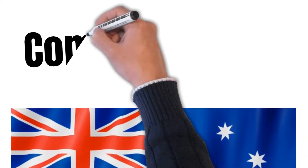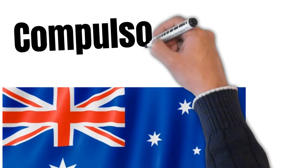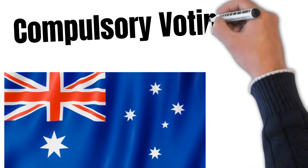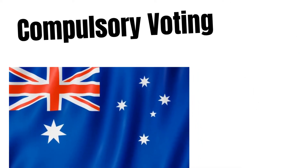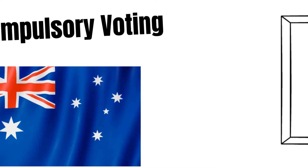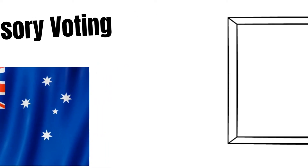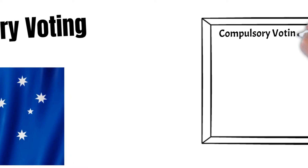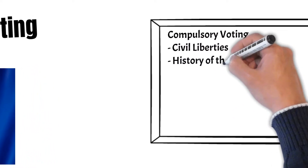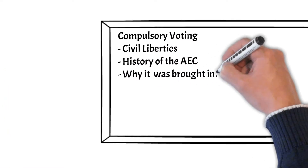If you're joining us for the first time, hello and welcome. If you are a returning supporter and friend, welcome back. This is Unboxing Economics. Today we'll be talking about compulsory voting in Australian federal elections. We will discuss a brief history and why it was introduced, arguments for and against compulsory voting, a discussion on civil responsibilities, a brief history of the AEC, and a link to the two-party preferred system.